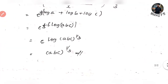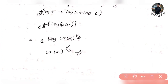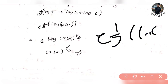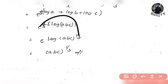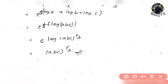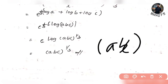Simplifying log a plus log b plus log c equals log of abc. So the answer is e raised to power 1 by 3 into log abc, which equals abc whole raised to power 1 by 3. That is your answer.